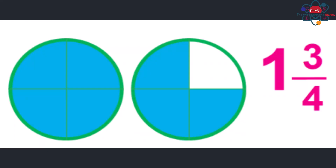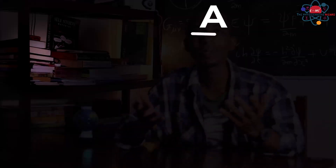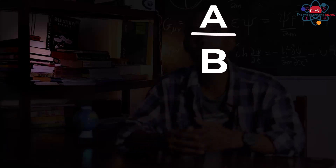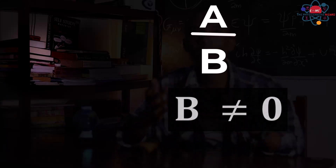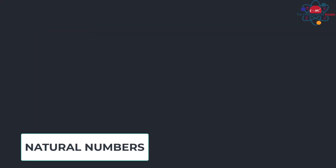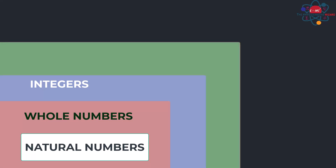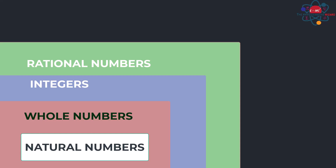Decimals can include a whole number part and a fraction part put together — for example, 1.5 and 3.6. Now, in order to generalize this, all numbers that can be written in the form a over b, where b is not equal to zero, are called rational numbers, since technically a divided by b is a ratio of a to b. It's important to recognize that every new type of numbers that was invented was a superset of all the number types that came before it: whole numbers contain all natural numbers, integers contain all whole numbers, and rational numbers contain all integers.